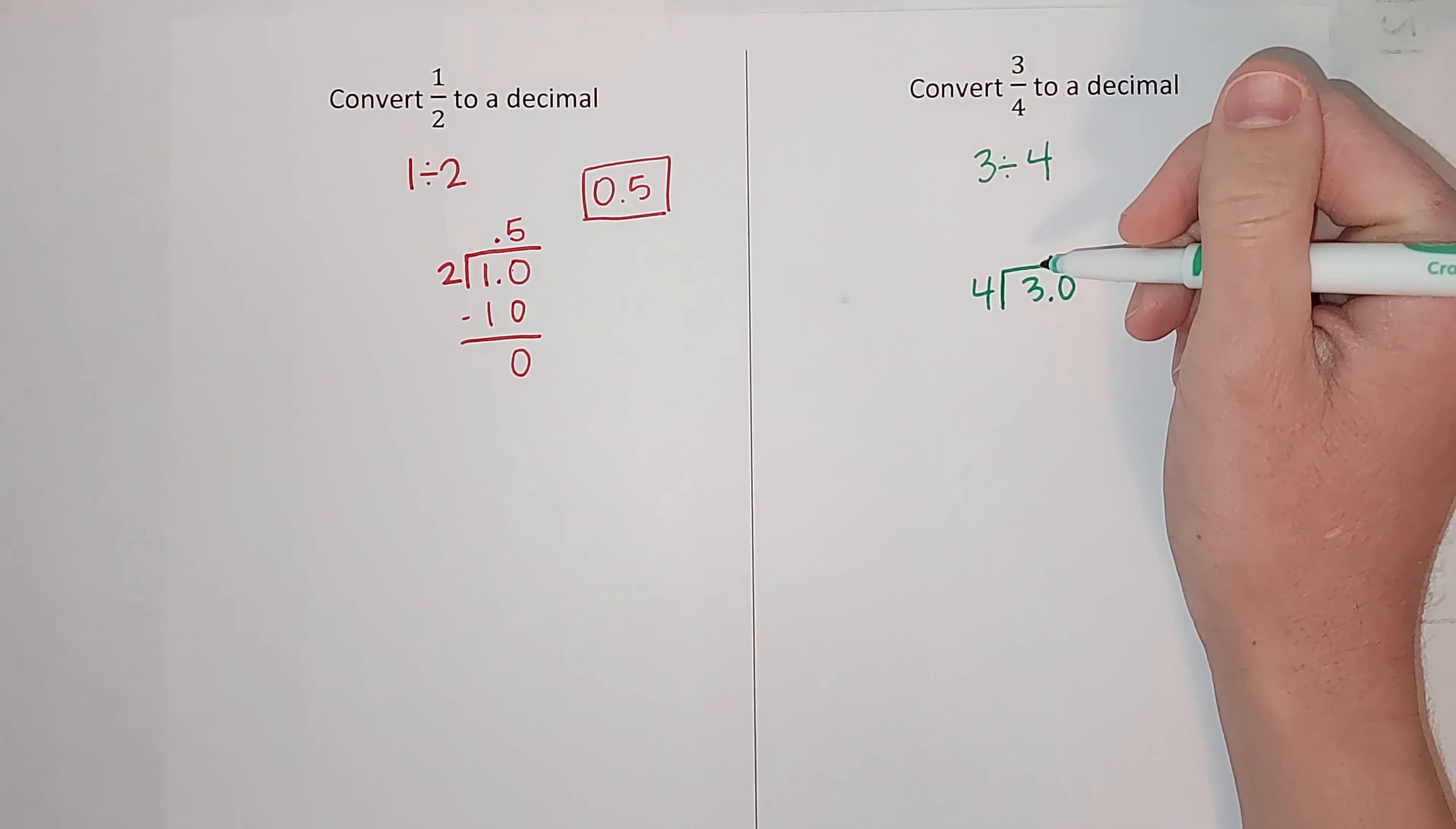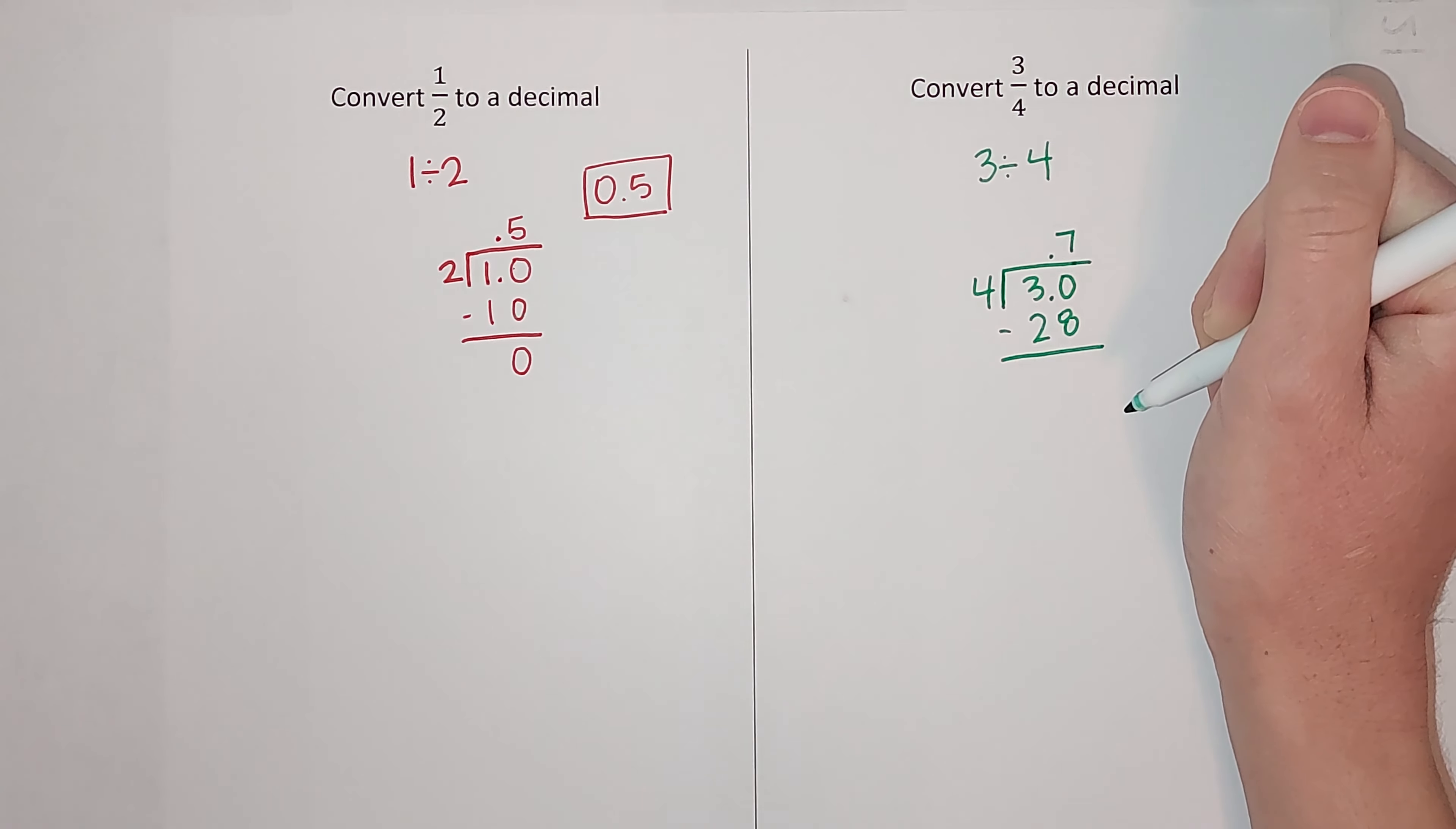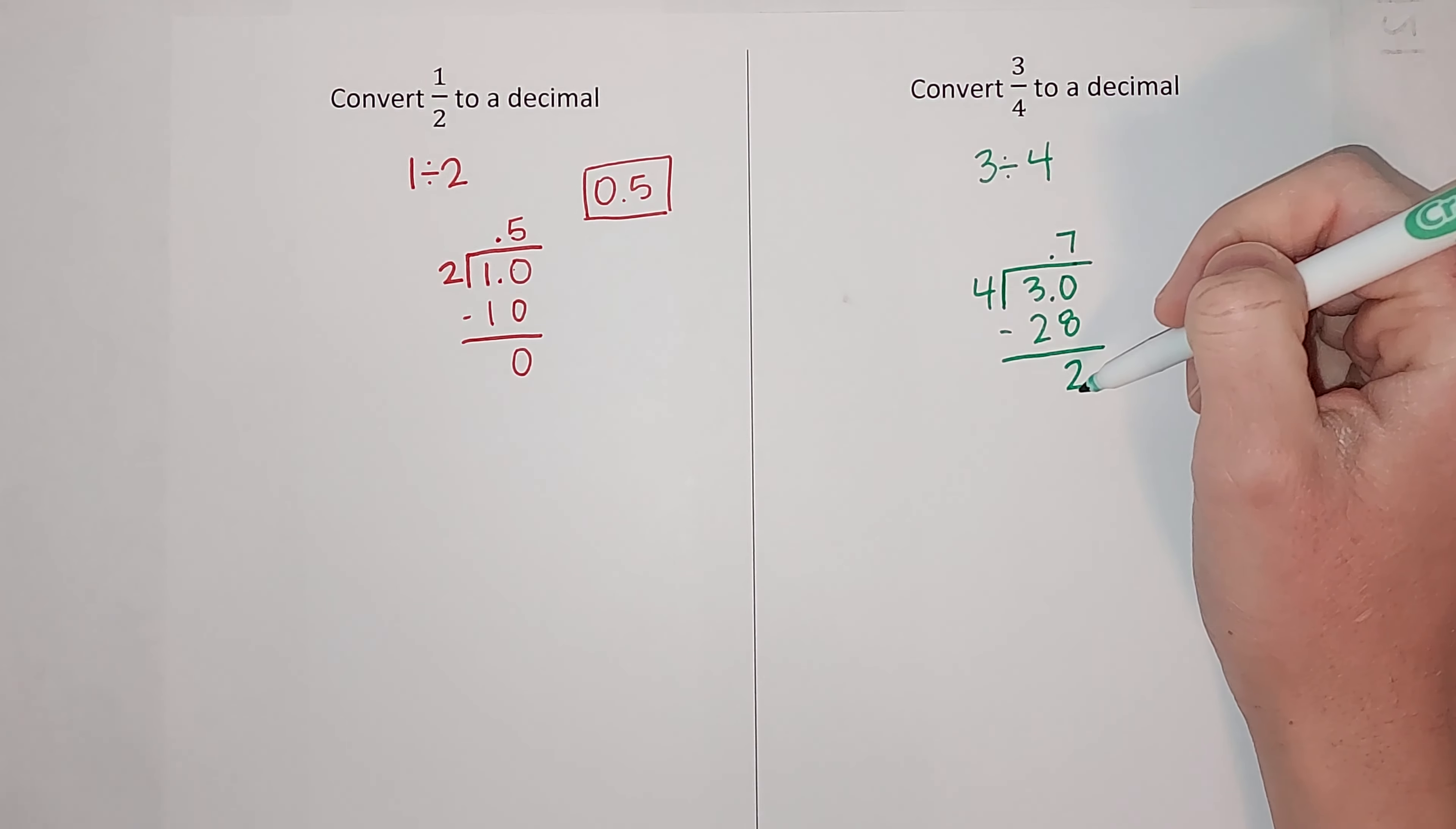Four goes into 30 how many times? Well, seven times four is 28, which is as close as I'm gonna get. Now I subtract that, so 30 minus 28 leaves me with two. So not quite done. I want this to be zero like it was over here. So I'm gonna add another zero because 3.00 is still the same as three.